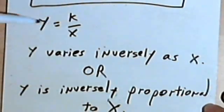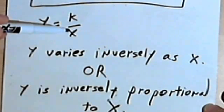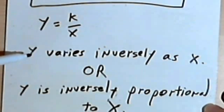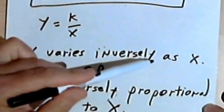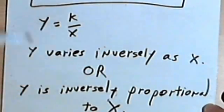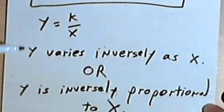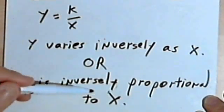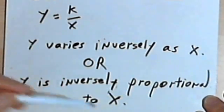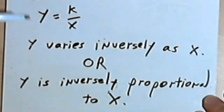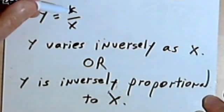So the general formula for inverse variation is y equals k over x. And you'll see sentences like y varies inversely as x. When you see something like that, that's your clue to write this general formula. Or you might see y is inversely proportional to x. And once again, you're going to write this general formula, y equals k over x.